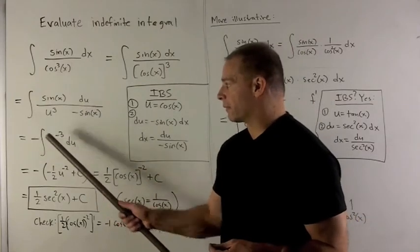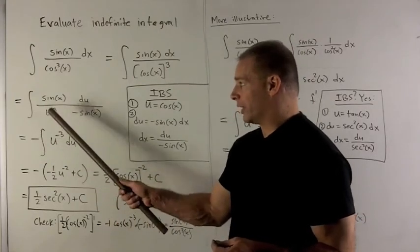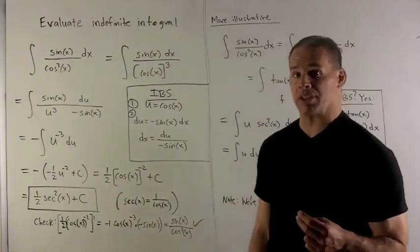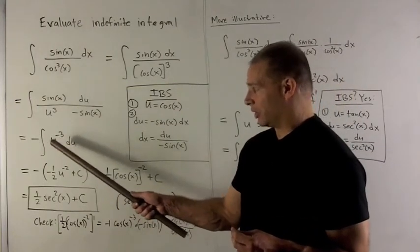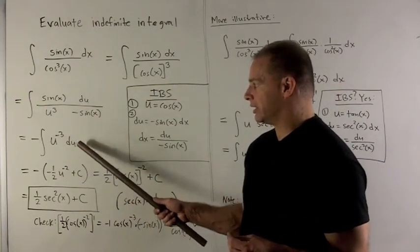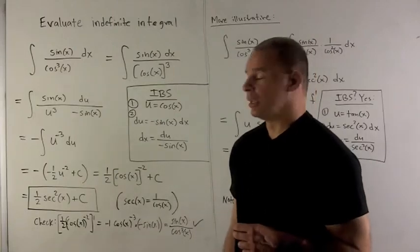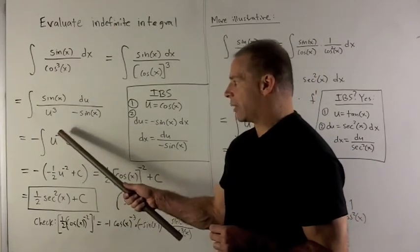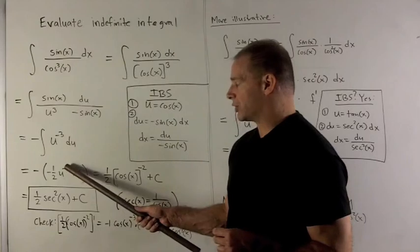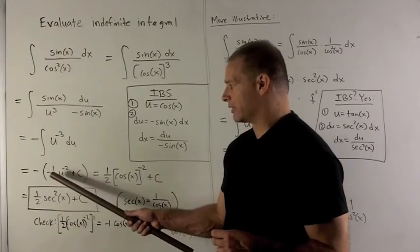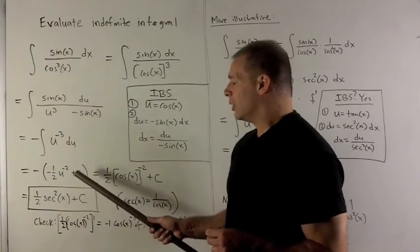I'm going to bring the minus 1 out to the front. I'm going to move the u cubed to the top, so when I move to the top, it picks up a minus sign. So I have minus integral u to the minus 3 du. To get the antiderivative of this, I just add 1, which gives me minus 2, and then flip that over, which gives me minus a half. We have the constant.